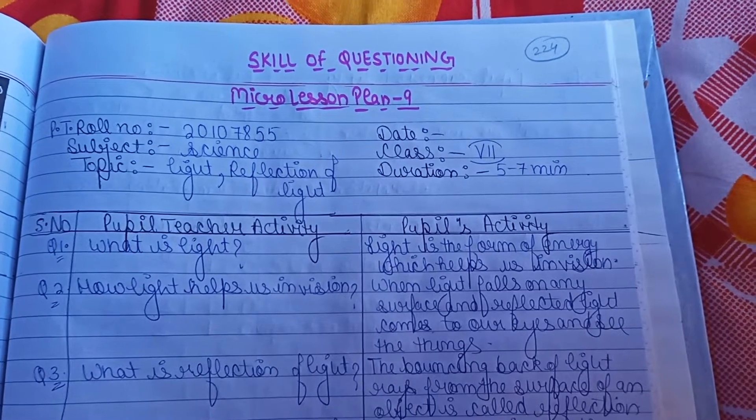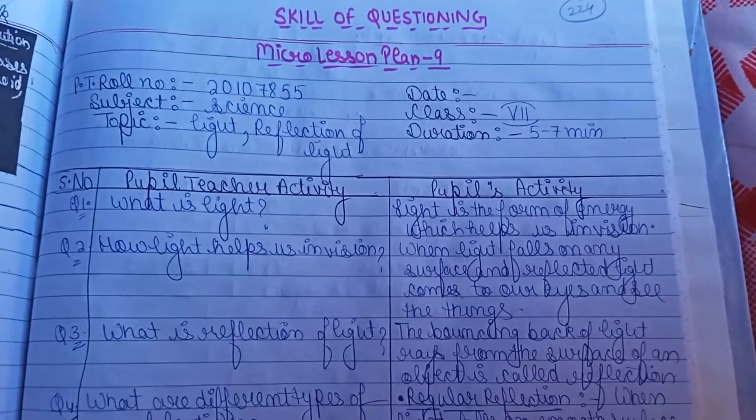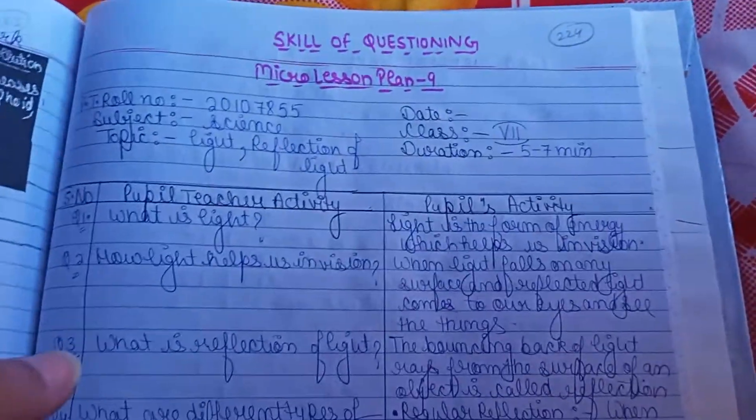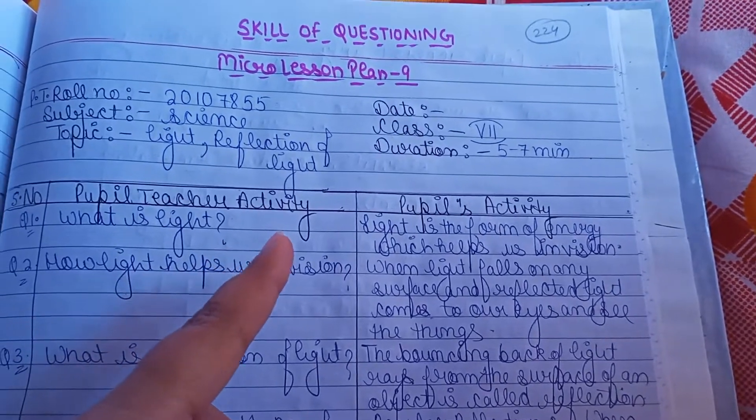Now here comes the next skill of micro lesson plan, the skill of questioning. We have already done four skills and this is the fifth and last skill, the skill of questioning.